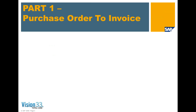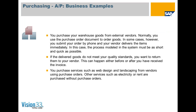Part one is about the purchase order to the invoice — the basic purchase process from purchase order to goods receipt and to invoice. The business examples that we're going to be using: